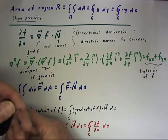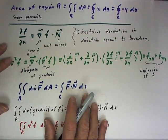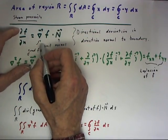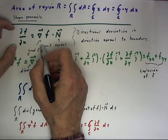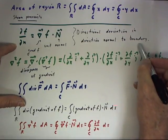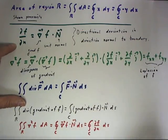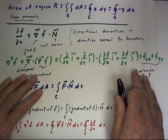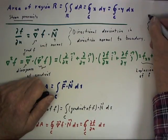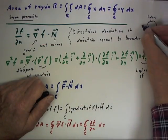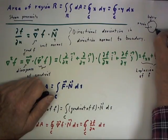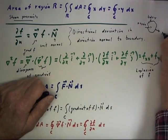We move on to another important application, and this is very important down the road. The normal derivative of a scalar function f is defined to be the directional derivative in the direction normal to the boundary. We have some region with a boundary, and we have the normal vector pointing outward from it.